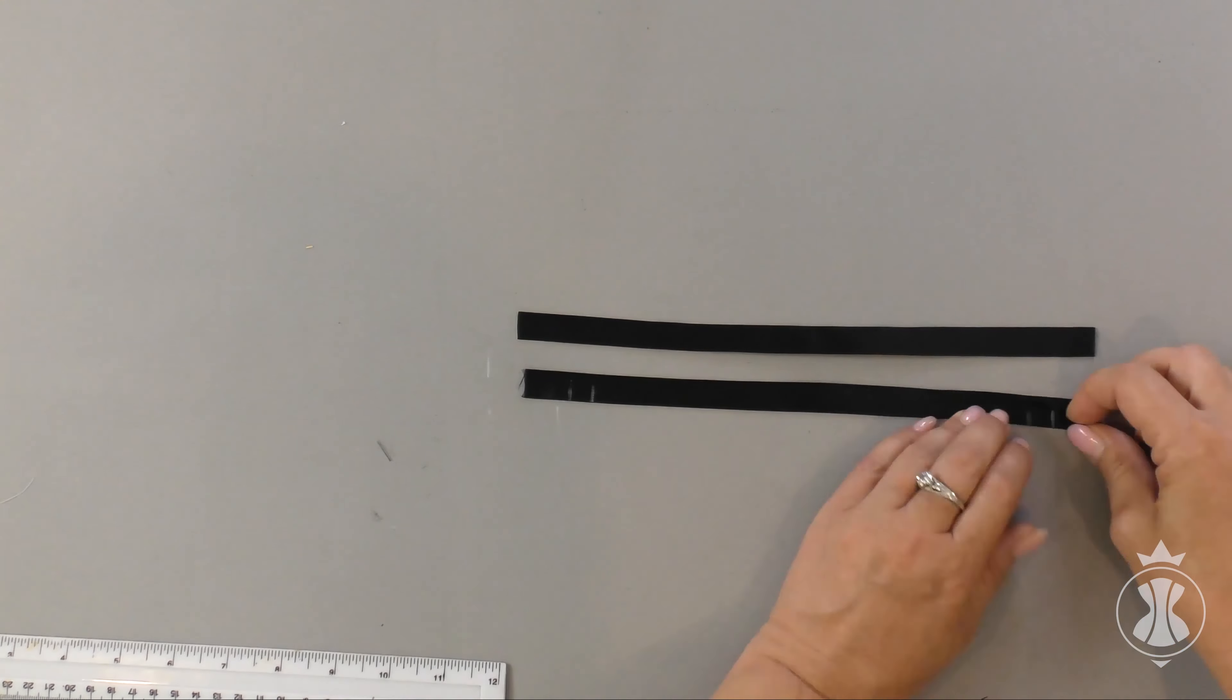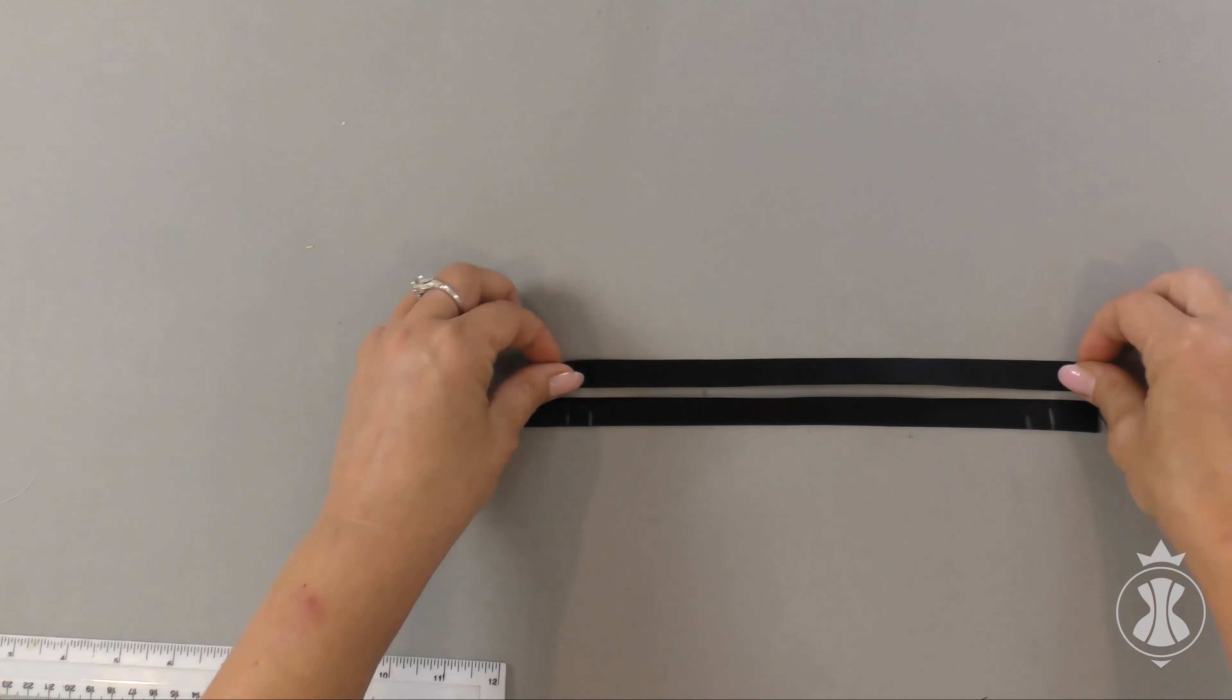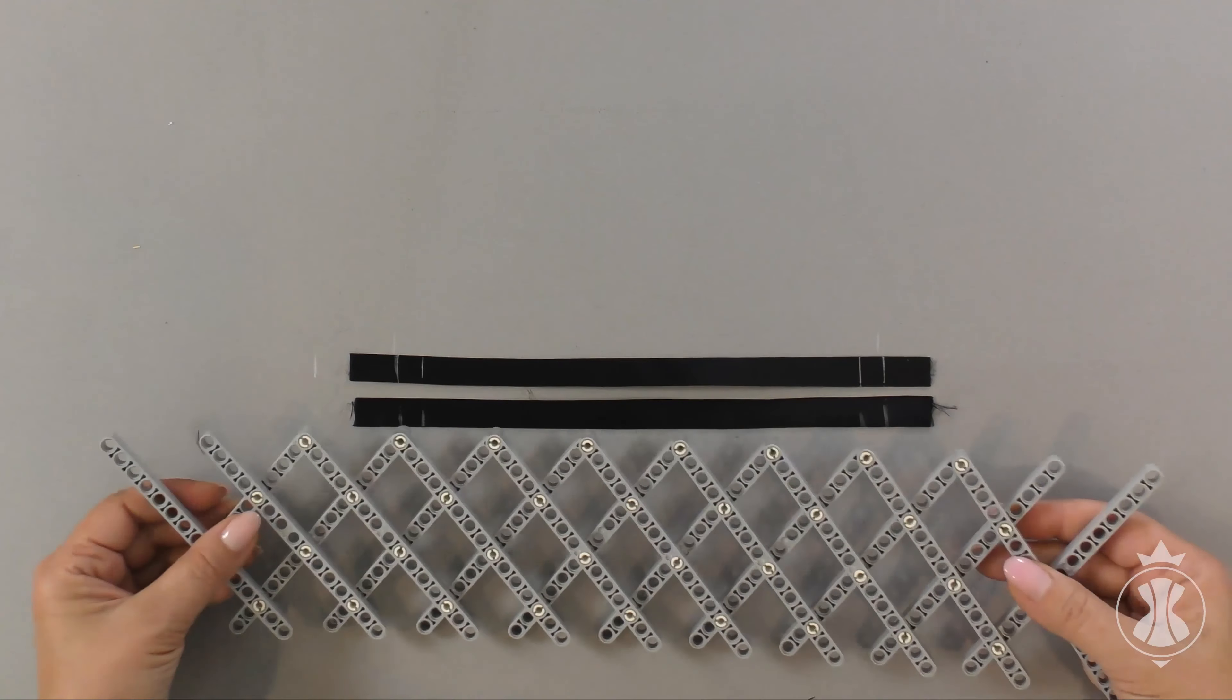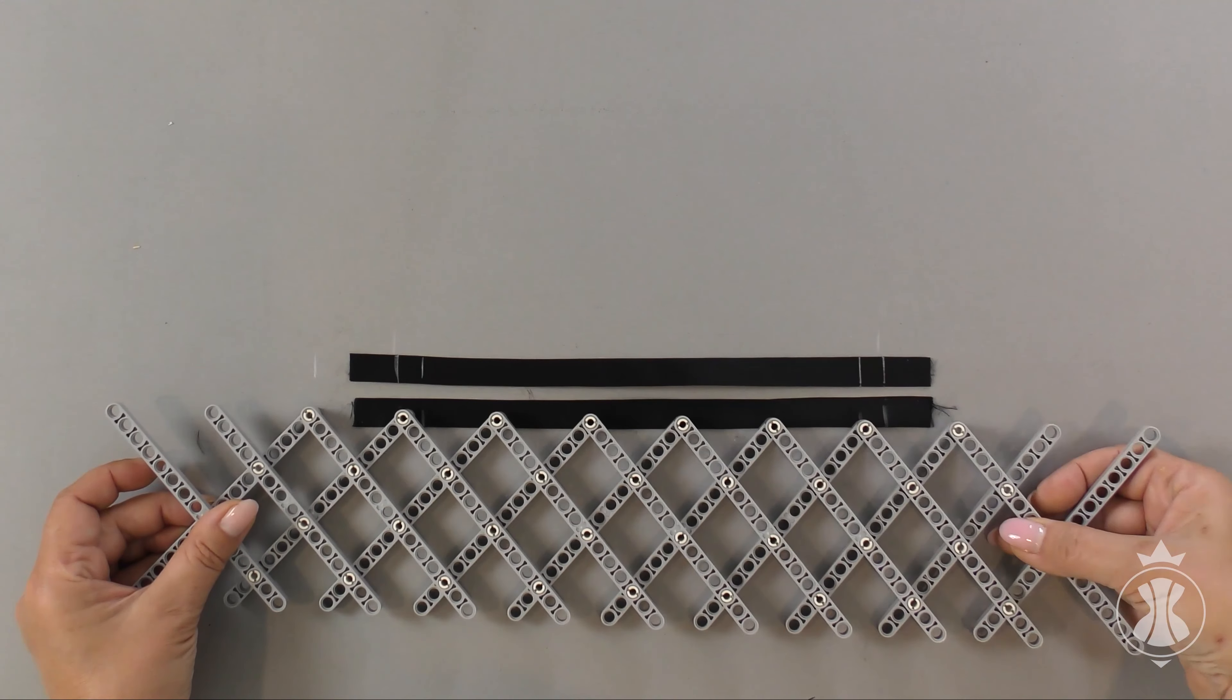We start to make the loops from the opposite side of the fold. I put the second tape symmetrically, move the pantograph apart, and see what distance between the loops suits me and how many loops I want to sew.